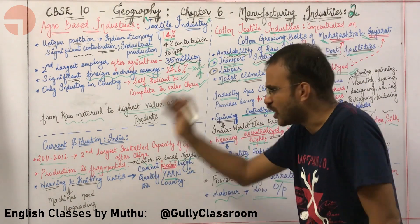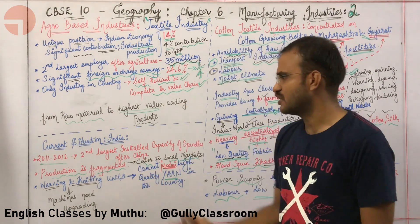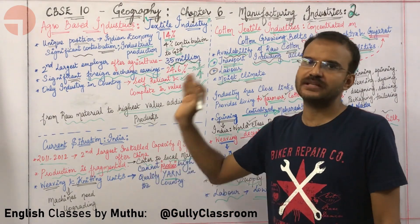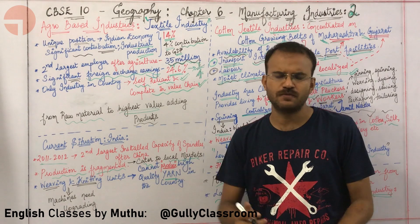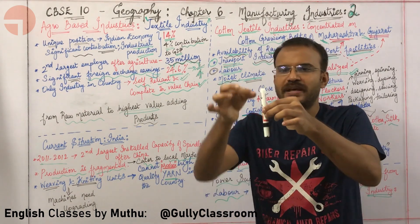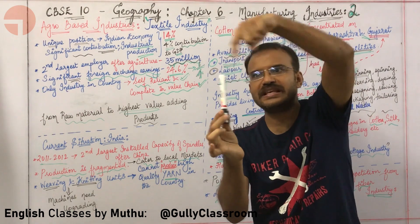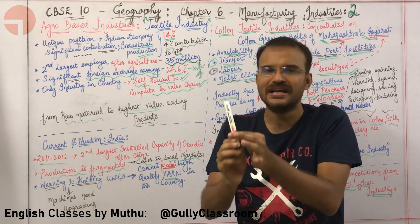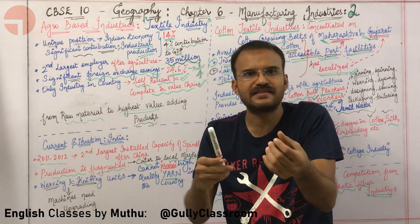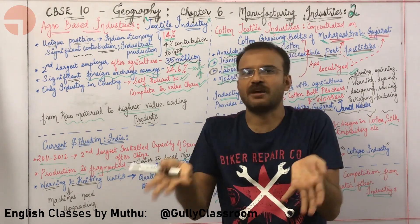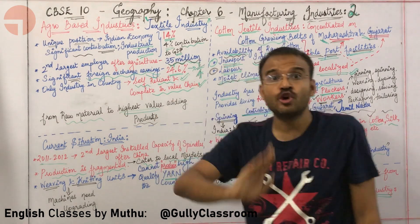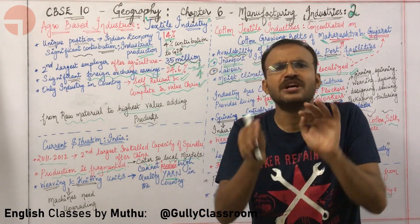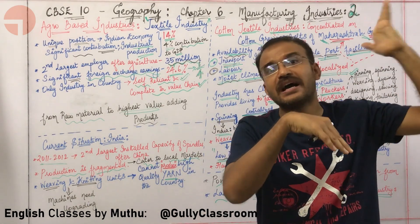What is the current scenario in cotton textile industry? As of 2011–2012, India has the second largest number of spindles after China. Spindles are the structures around which yarn is threaded — the more the spindles, the greater the capacity to convert fiber to yarn. Even though India has the second largest installed capacity of spindles after China, our production is not competitive in the international market.